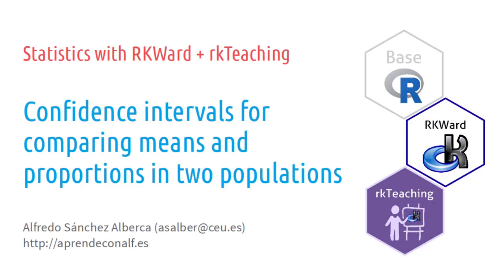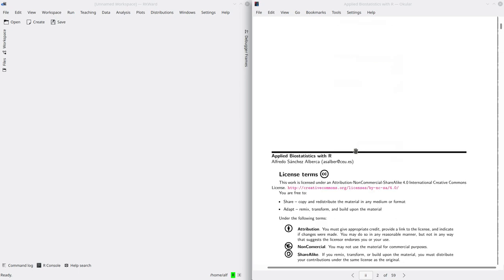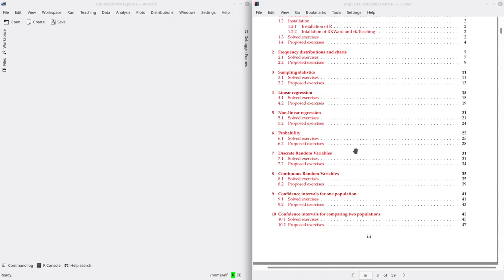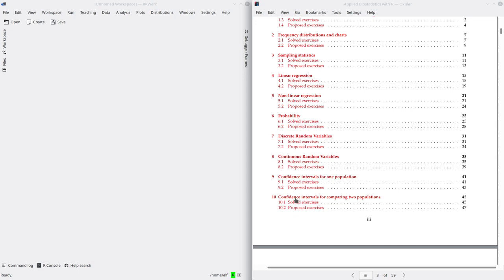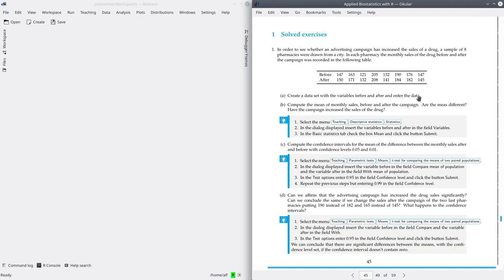Hi, welcome to this video about statistics with IQR and the package architecture. In this video, we're going to talk about how to compute confidence intervals in order to compare two populations. Open the booklet and go to chapter Practice 10, that is confidence interval for comparing two populations. Let's go to exercise 1.